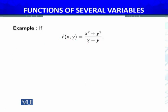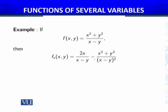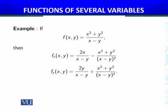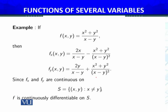If f(x, y) is a function of two variables defined by (x² + y²) / (x − y), then the partial derivative fx(x, y) can easily be evaluated using the quotient rule. Simplifying gives one expression, and the partial derivative with respect to y can also be evaluated. These partial derivatives are continuous over the domain — everywhere except where x equals y.